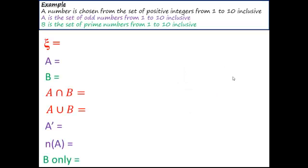Let's take a look at how we might apply this to a question. A number is chosen from the set of positive integers from 1 to 10 inclusive. So basically, that's telling us what our universal set is. The universal set is 1, 2, 3. Now, in maths, you can use three dots to mean everything in between all the way up to 10.